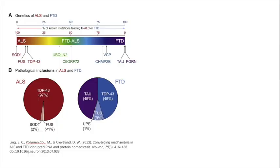Recently, mutations in genes encoding RNA binding proteins TDP-43 and FUS have been associated with ALS and FTD. Most strikingly, TDP-43 and FUS pathology has been observed in a large proportion of these diseases, underscoring the critical roles of these RNA binding proteins in pathogenesis.